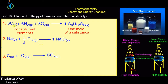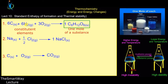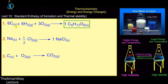I gave you three examples. The first equation shows the standard enthalpy of formation for glucose, which is formed from its three constituent elements: carbon, which exists as a solid; hydrogen, which exists as a gas; and oxygen, which also exists as a gas in its standard state.